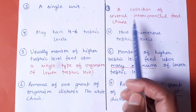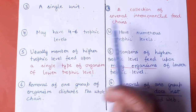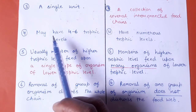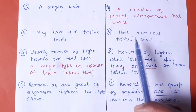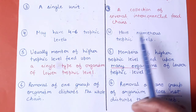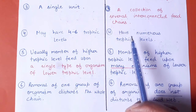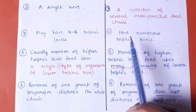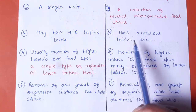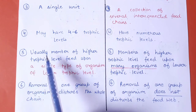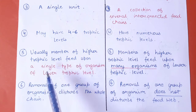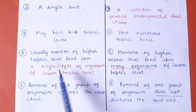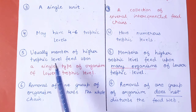If we talk about trophic levels, a food chain has 4 to 6 trophic levels. A food web has many more trophic levels because it contains many food chains, and each food chain can have a different trophic level, resulting in many trophic levels overall.